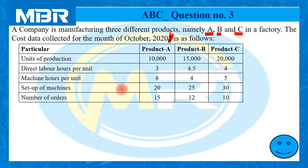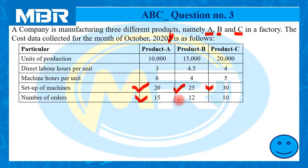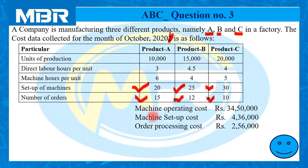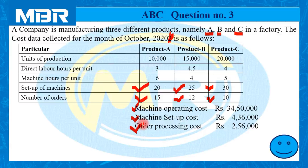Number of setups required for the machines: in case of product A it is 20, for B it is 25, and in case of C, 30. Number of orders: 15 in case of A, 12 in case of B, and 10 in case of C. Overheads are given to us: machine operating cost 34,50,000; machine setup cost 4,36,000; and order processing cost 2,56,000.